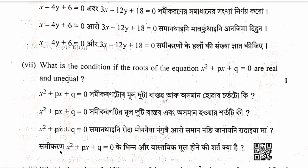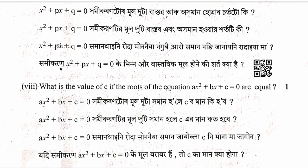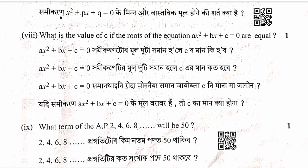Question: What is the condition that the roots of the equation x squared plus px plus q equals 0 are real and unequal? For equal roots, discriminant equals zero, so b squared minus 4ac equals 0, giving c equals b squared by 4.